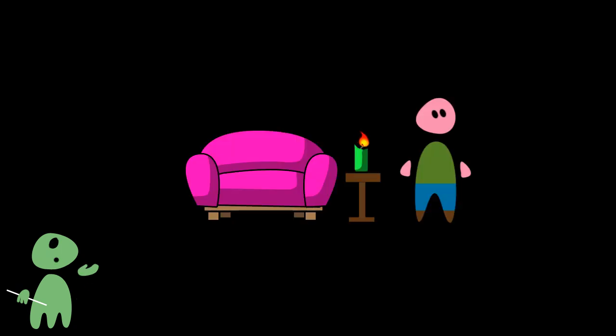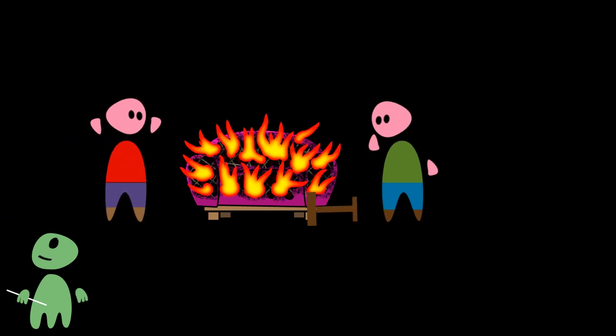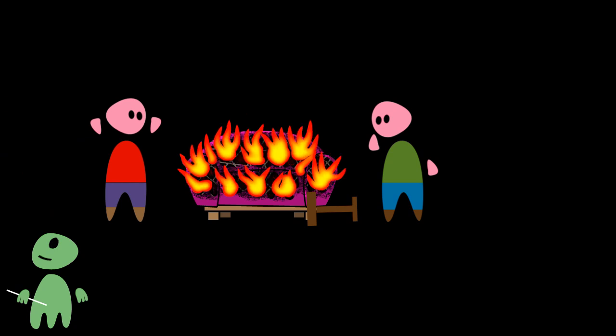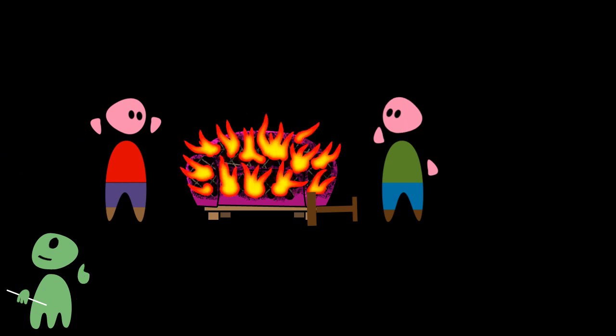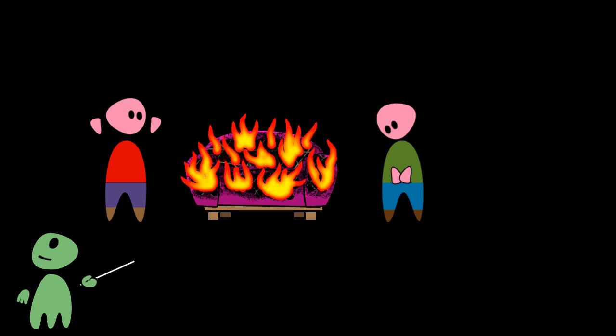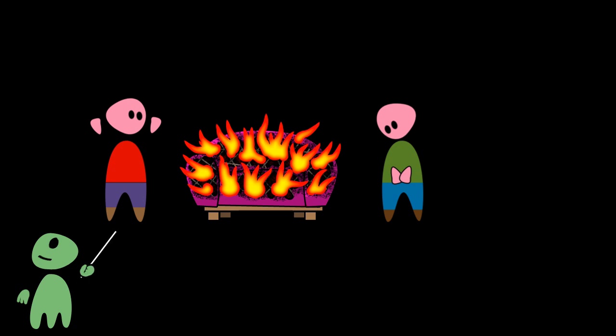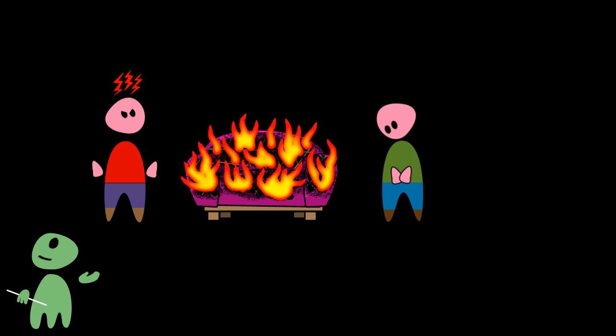Now, what happens if B does something bad to A, like ruining his sofa by accident? There is another mechanism for this kind of situation. In this case, B is considered at fault, which has three consequences. First, B is punished by the feeling of guilt caused by the nigala in his head. Second, A resents B for a while, which is just a ritual to communicate fault and maintain guilt.